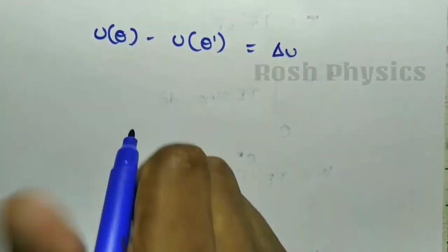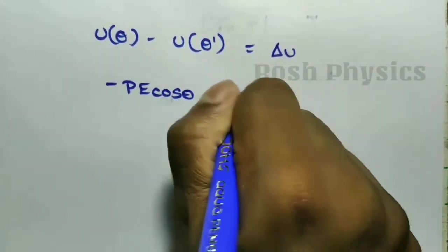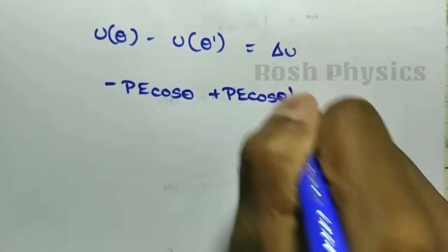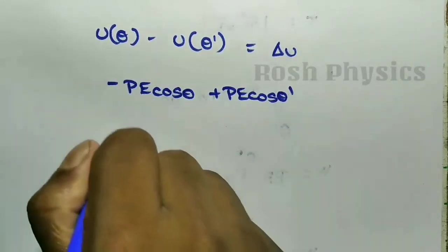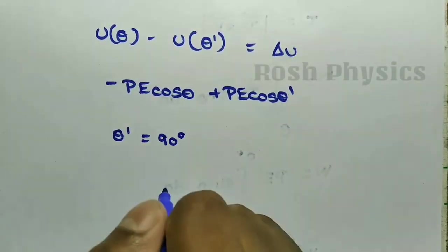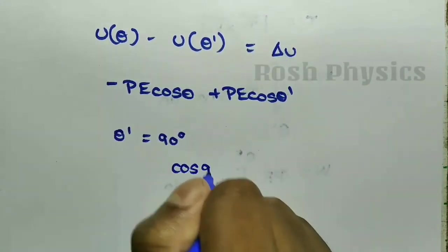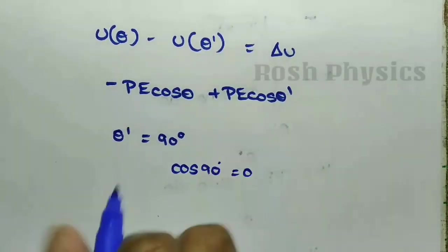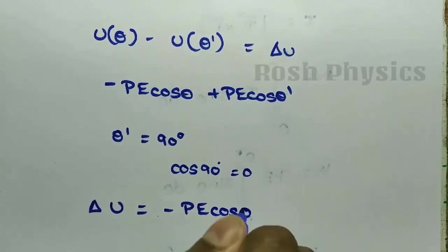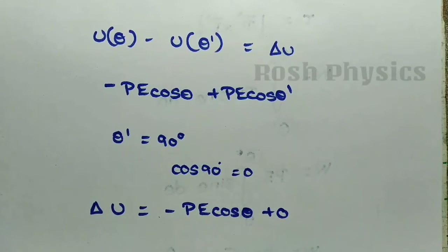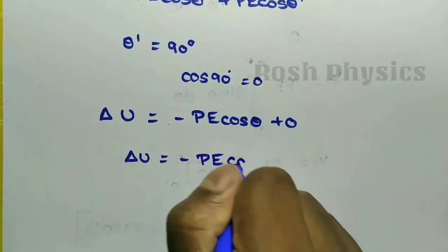Taking the value of W, we get ΔU = −pE cosθ + pE cosθ'. If the initial angle θ' is equal to 90°, then cos 90° = 0, so the term pE cosθ' vanishes. Therefore ΔU simplifies to U = −pE cosθ.